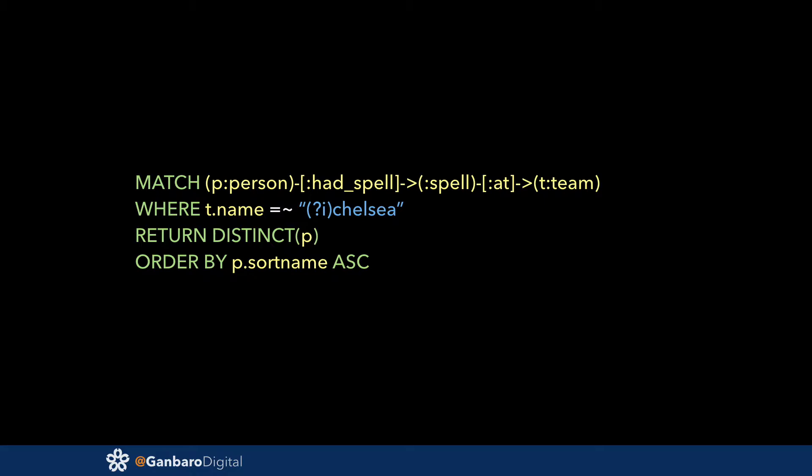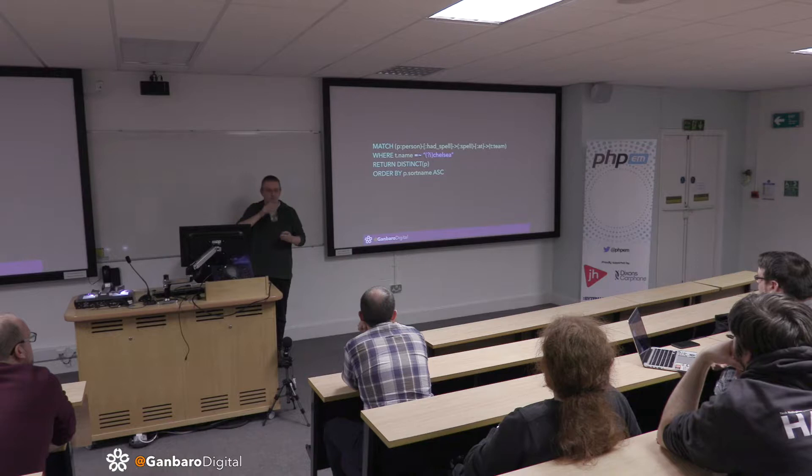Once we've found those we just have to tell Neo4j what to return. That's the full query to produce that A-to-Z page — hopefully you'll agree it's pretty readable.